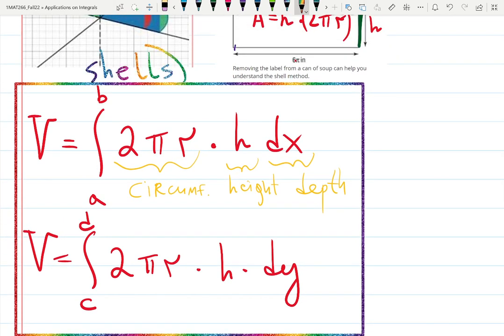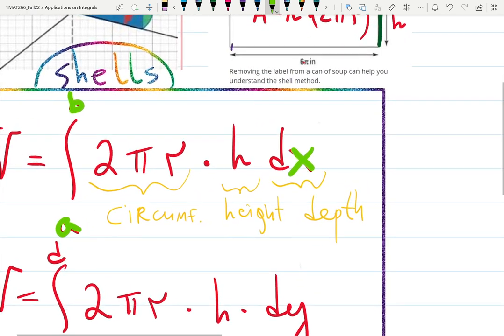Volume using shell methods. Shells. So, check this out. Very interesting situation going on here. The first integral is in terms of x. It's from A to B. We know that. What is the function, and what is the constant? 2π is a constant. We know that.